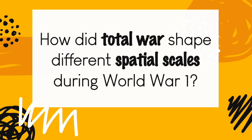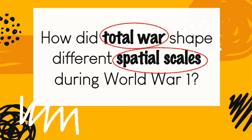Sometimes we have a lot of different ideas, and sometimes those ideas don't relate to the topic. Eliminating irrelevant details is important because we want to stay on topic. We want to distinguish between information that is essential and non-essential, and we also want to organize our writing. Let's look at the question again: How did total war shape different spatial scales during World War I? So we want to start here with total war.